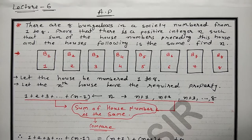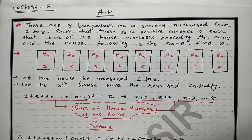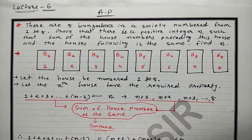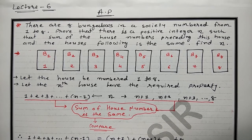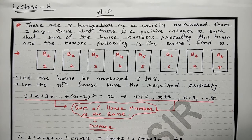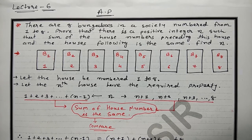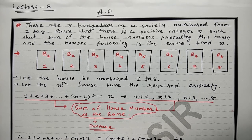Hello friends, welcome again. Today we will see lecture 6. There are 8 bungalows in a society, numbered from 1 to 8. Prove that there is a positive integer N such that the sum of the house numbers preceding this house and the houses following is the same. Find N.